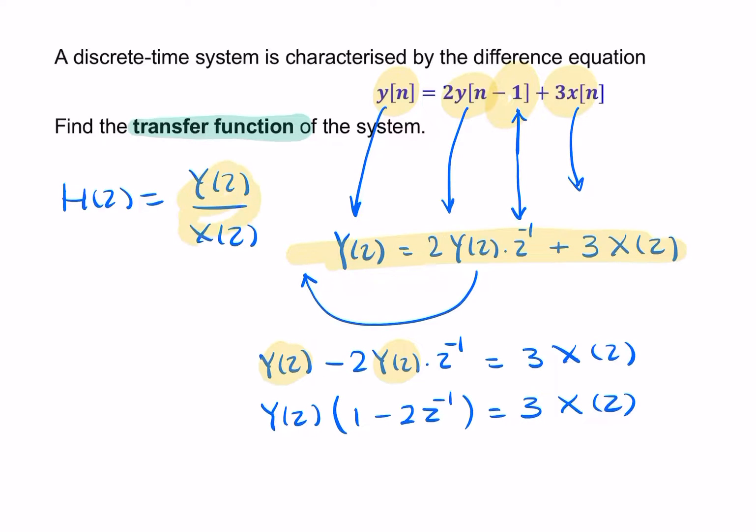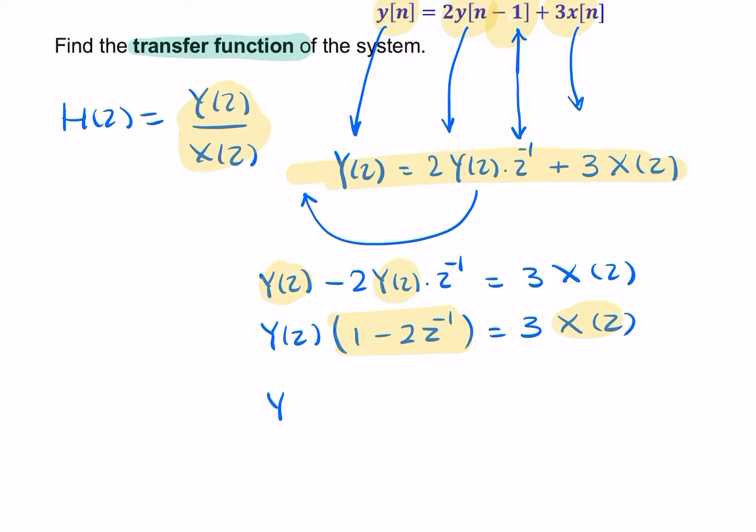What we're trying to find is y of z over x of z. So I can simply divide both sides by x of z and divide both sides by this term. And that will give me y of z over x of z equals 3 over 1 minus 2z to the minus 1.